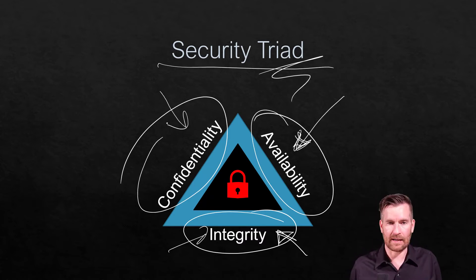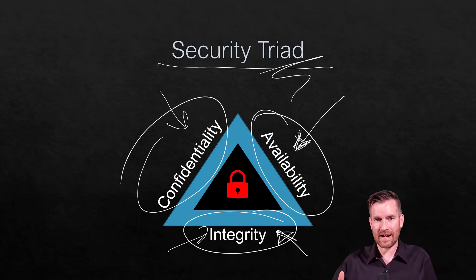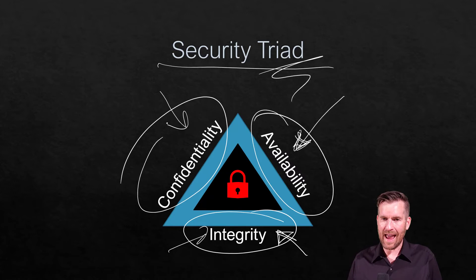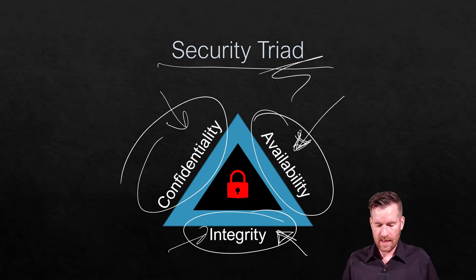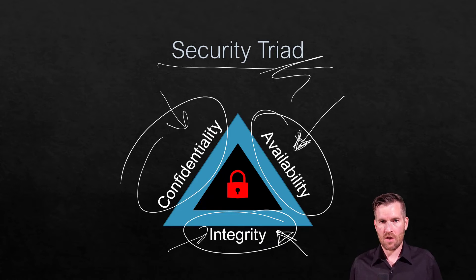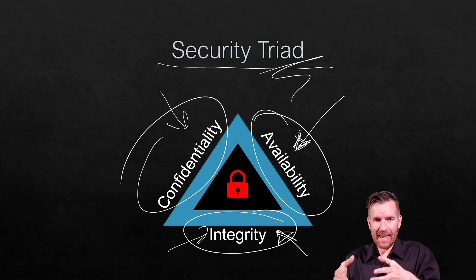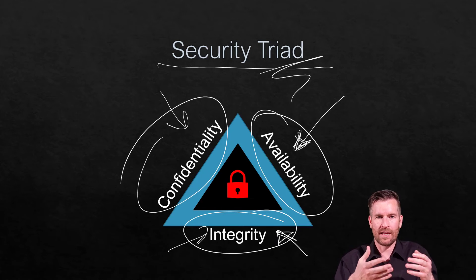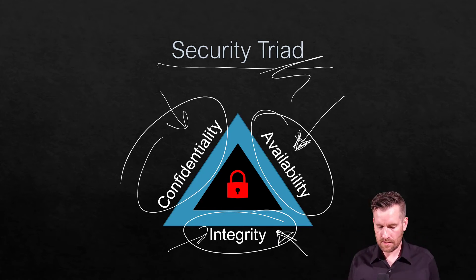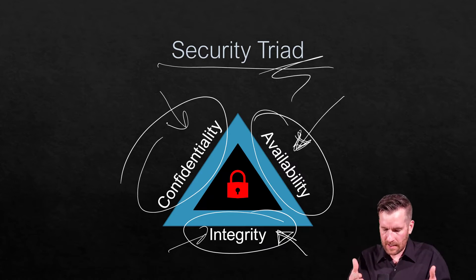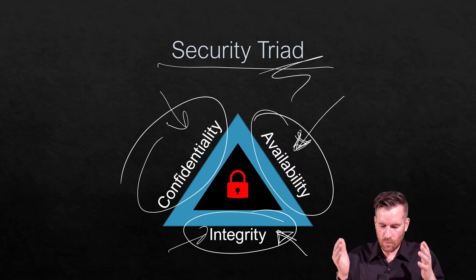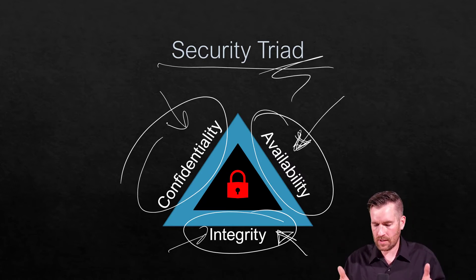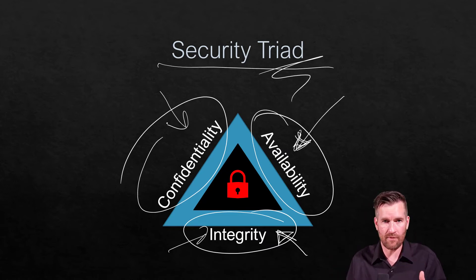Then there's confidentiality. Maybe your customers are getting online and purchasing something from your website, and then you have a breach where the credit card information users were entering is now in the outside world. That's a breach of confidentiality — you had customer data and it was exposed to the outside world when it wasn't supposed to be. So within confidentiality, availability, and integrity, we need to think about how to create secure networks so we don't have a breach of any of them.